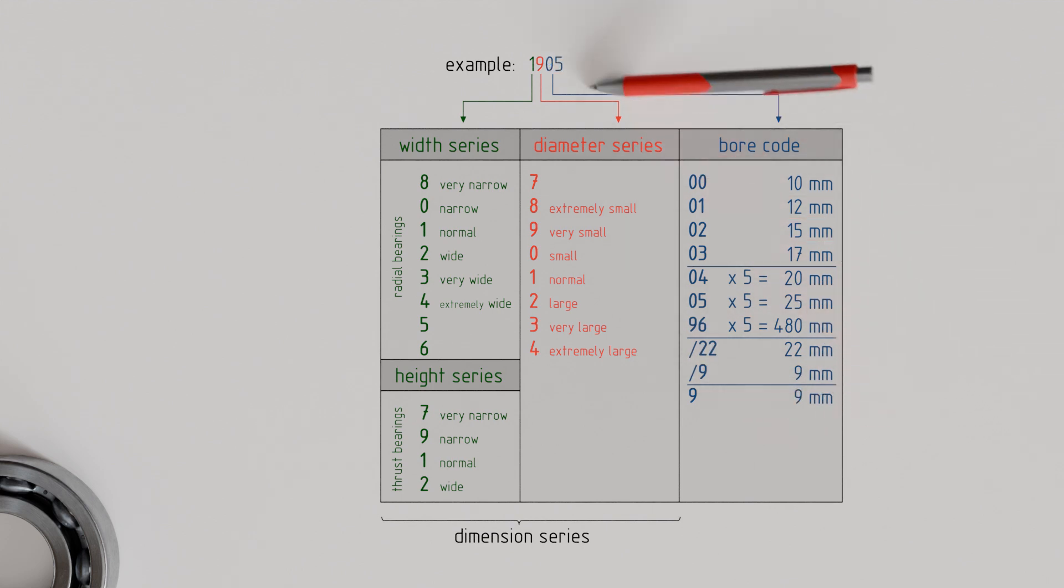Now that we know the dimensions of our rolling bearing with width series 1, diameter series 9, and bore code 05, we can look them up in the datasheets of rolling bearing manufacturers. However, one important designation is still missing,